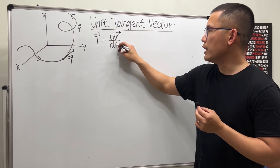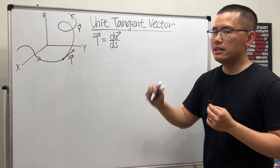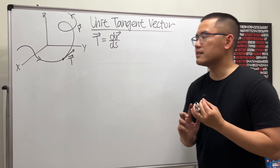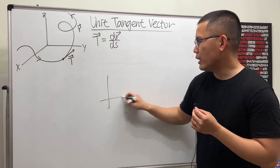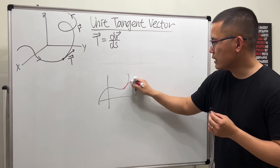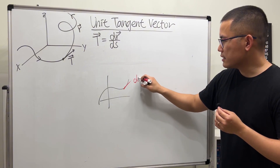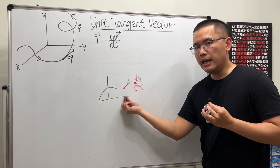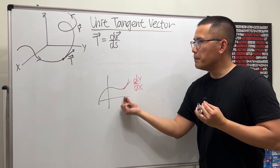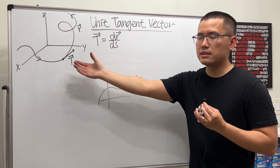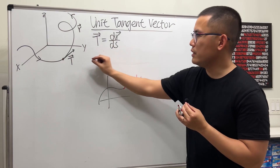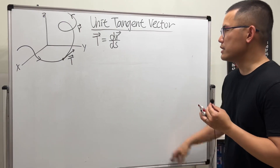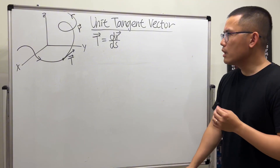T is defined as the derivative of r with respect to s, where s is the arc length. This is analogous to Calc 1 where the slope of a tangent line is dy/dx, but in the Calc 3 situation we consider the change in arc length rather than just the x-axis. In fact, many quantities in Calc 3 will be divided by arc length.